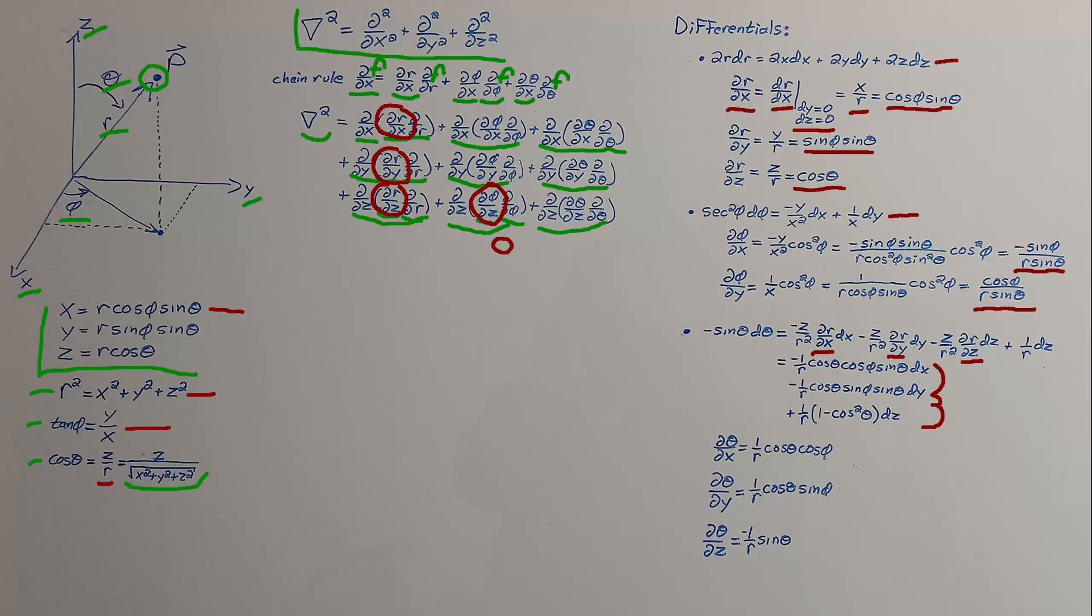So we can put all that together and get this guy here for the differential. Using that differential like we did above, we can get expressions for partial of theta with respect to x, y, and z.